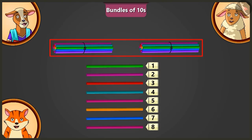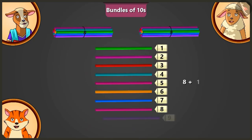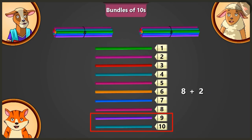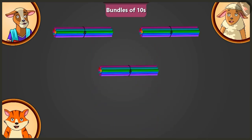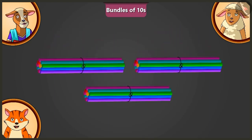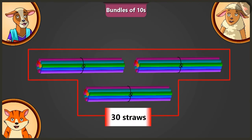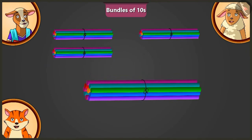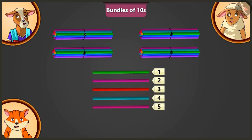Look, Lily, there are 2 bundles of 10 and 8 straws here. Now, tell me, how many straws will we have to add to 8 straws to make a third bundle of 10? If we add 2 straws to 8 straws, there will be 10 straws. Like this, we can make a third bundle of 10. Well done, Lily! So yes, Lily, you need 45 straws. There are 30 straws here. So now how many more straws will we add to them? We will put one more bundle of 10 straws and keep 5 straws.